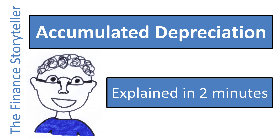Accumulated depreciation is the title of the contra-asset account on the balance sheet, which is used when depreciation expense is recorded each accounting period. Let's review how accumulated depreciation works with an example.